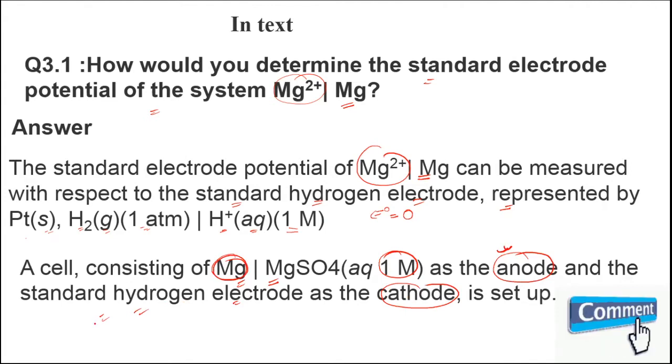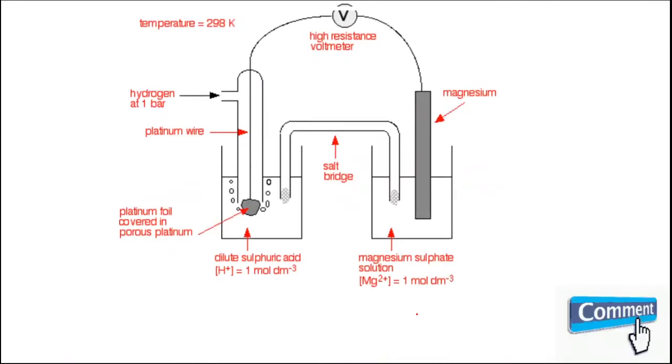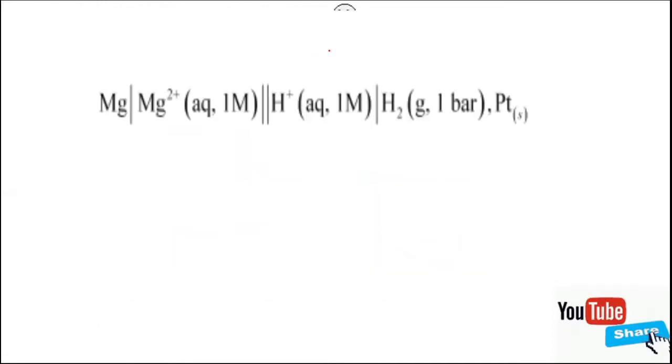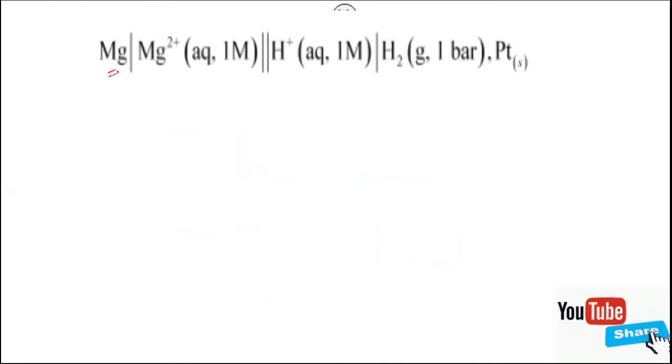This is the cell setup in which the magnesium rod is dipped in magnesium sulfate solution, and this is the standard hydrogen electrode. It is connected with a salt bridge, and this is the voltmeter which has high resistance. When we set up this cell, the cell representation is: magnesium is changed into magnesium ion, salt bridge, H⁺ ion is changed into H₂.